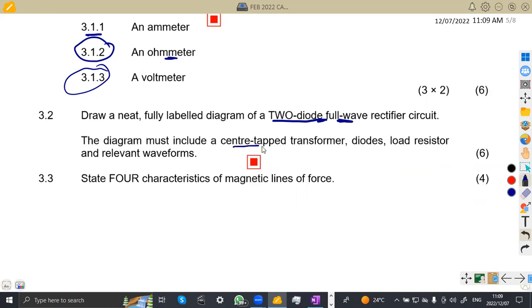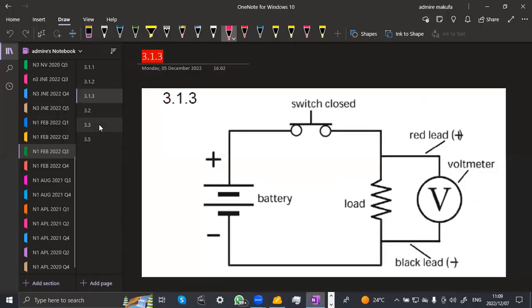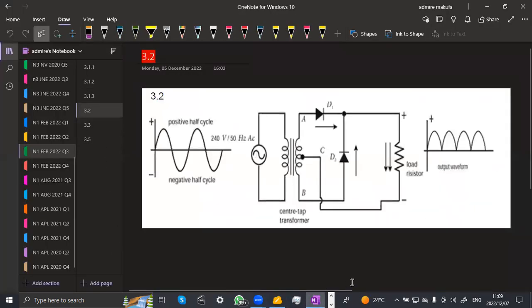The diagram must include a center-tapped transformer, diodes, that is two diodes, a load resistor, and relevant waveforms. Which are the relevant waveforms? We've got the input and output waveforms. This is your input waveform. We're having the positive half cycle, the negative half cycle. This is just supposed to be taken from zero to 360 degrees.